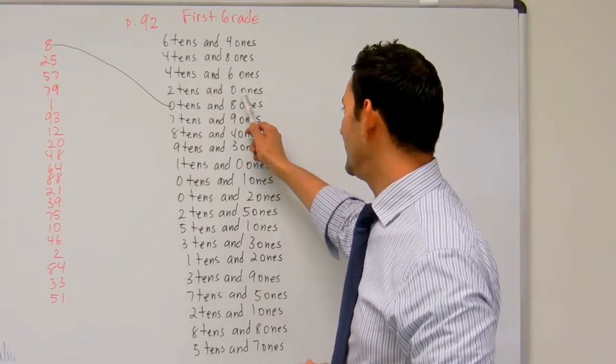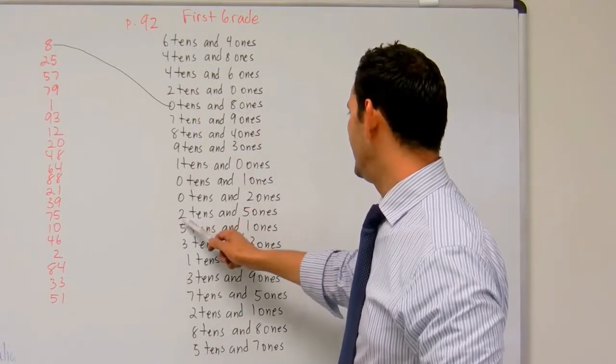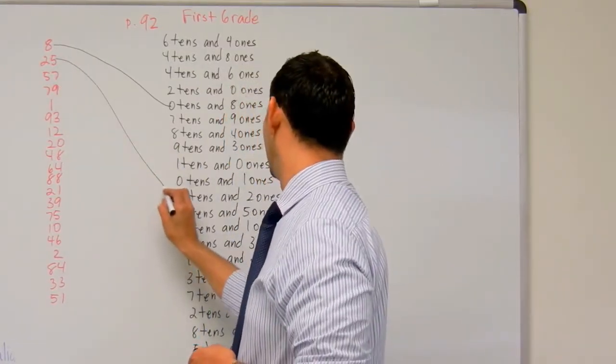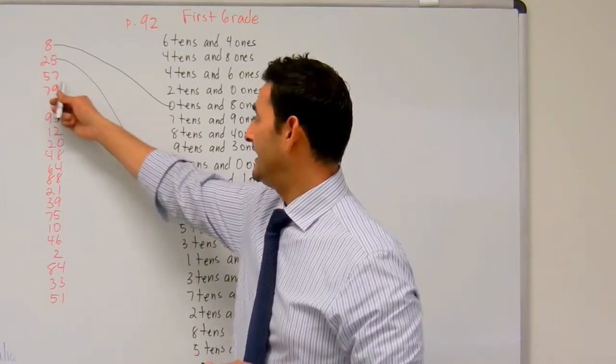I've got two tens there. Nope, zero ones. That's not it. Two tens, five ones. Is that 25? Yes, it is. Let's take a look at the next one.